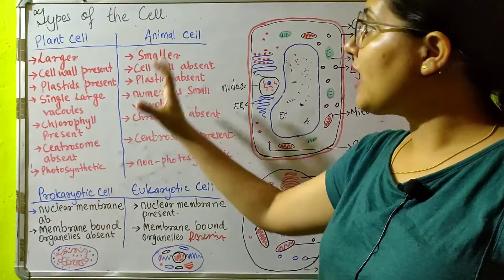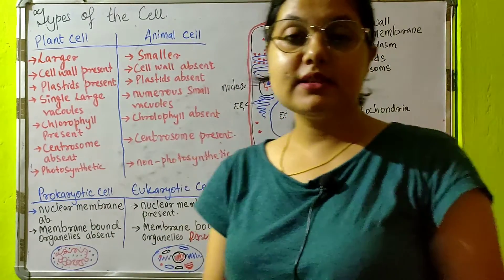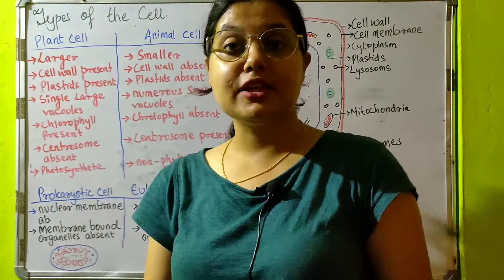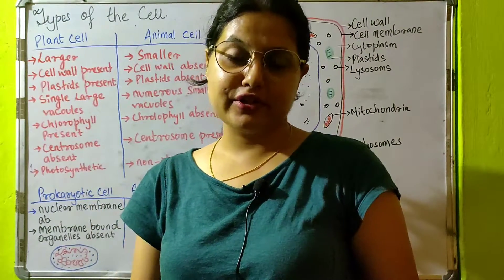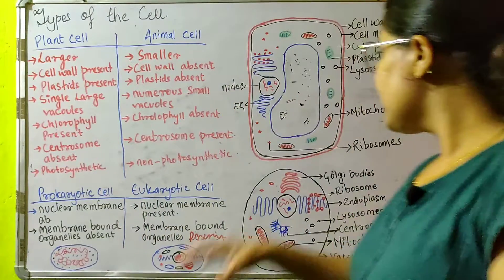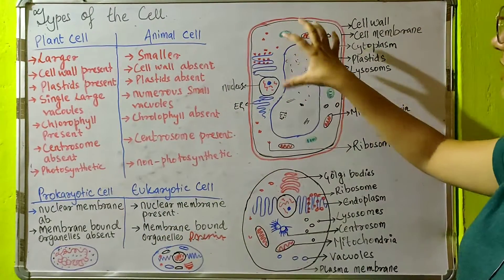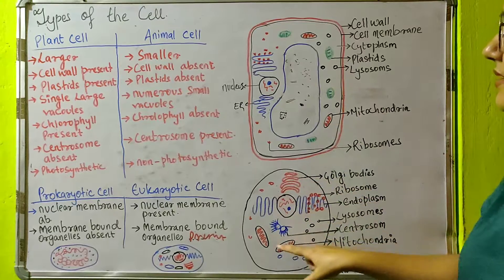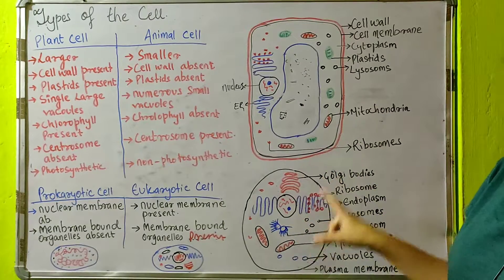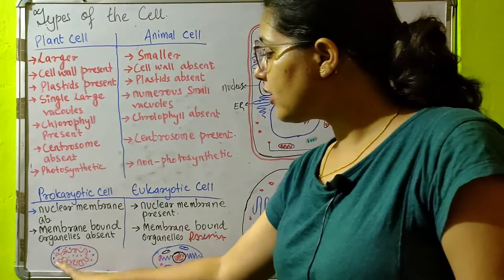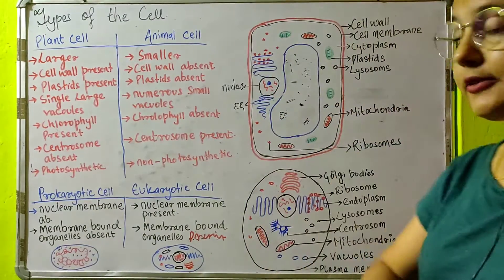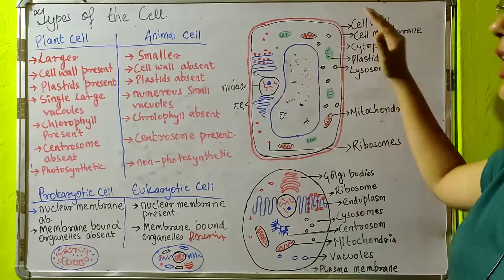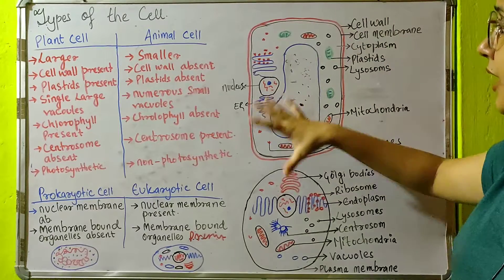Now I think you are clear that both plant cell and animal cell are eukaryotic. This is because the plant cell has membrane-bound organelles and the animal cell also has membrane-bound organelles, unlike prokaryotic cells where organelles are scattered all around.